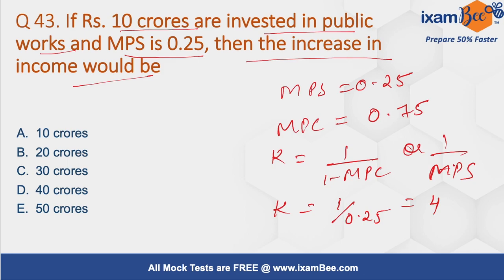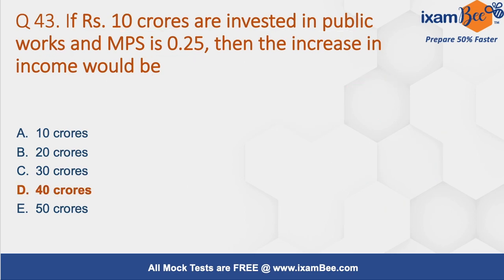We multiply the multiplier by the amount invested in public works: 4 multiplied by 10 crore equals 40 crore. So the answer here is 40 crore, which is option D.